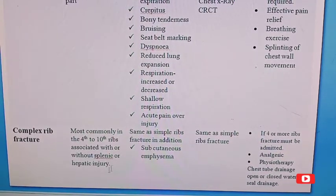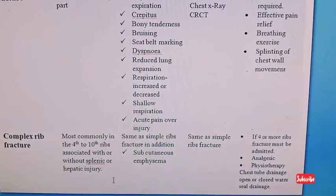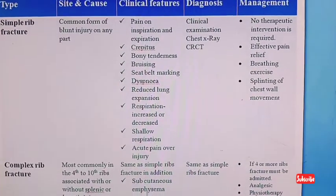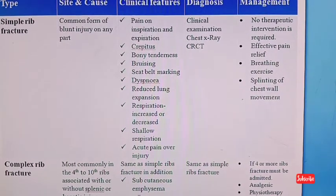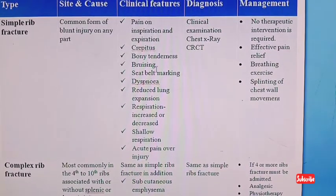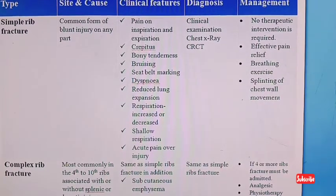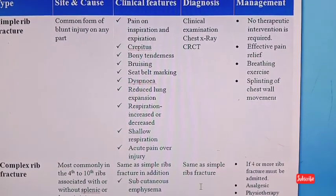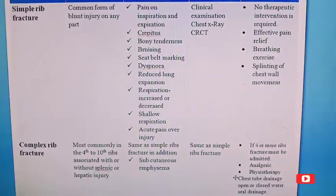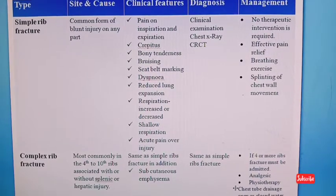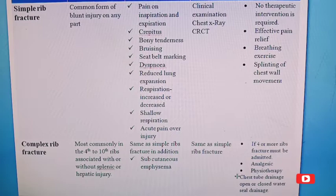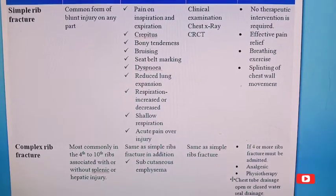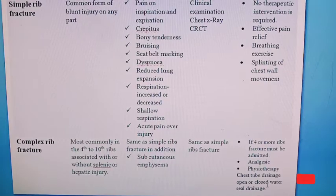Complex rib fracture is most commonly seen in the 4th to 10th ribs, associated with or without splenic or hepatic injury. Clinical manifestations are mainly similar to simple rib fracture, with subcutaneous emphysema as an additional feature. Diagnosis is the same — history, physical assessment, X-ray, and CT scan. Management: if 4 or more ribs are fractured, the patient must be admitted. Treatment includes pain management with analgesics, physiotherapy, and chest tube drainage with open or closed water seal drainage.